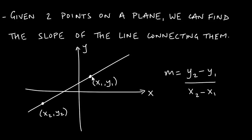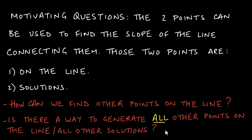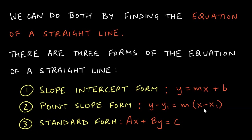We know there are two points on this line and both are solutions, but what about all the other points? In mathematics we are motivated by wanting to solve equations and find all potential solutions. We have two solutions here — is there a way to generate all the other solutions or all the other points on the line? The answer is yes, by finding the equation of the straight line joining those two points.